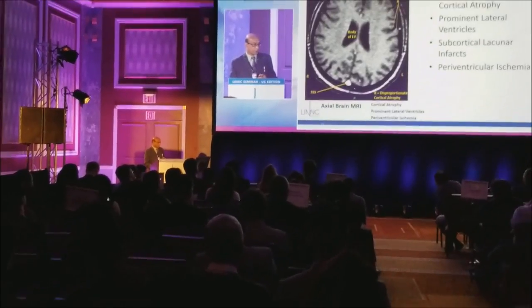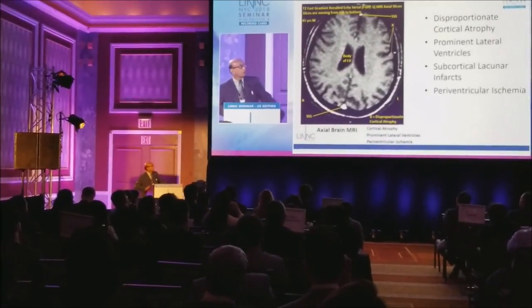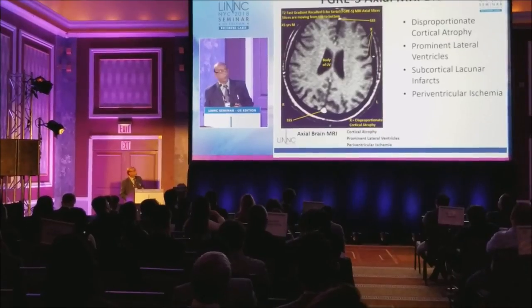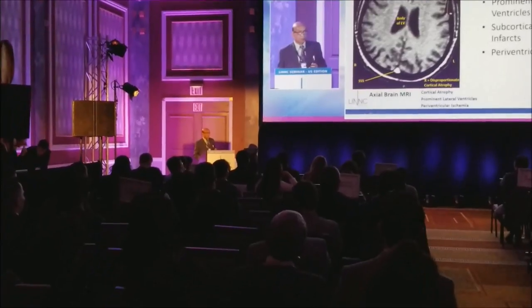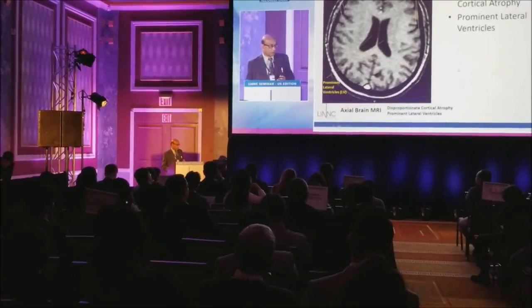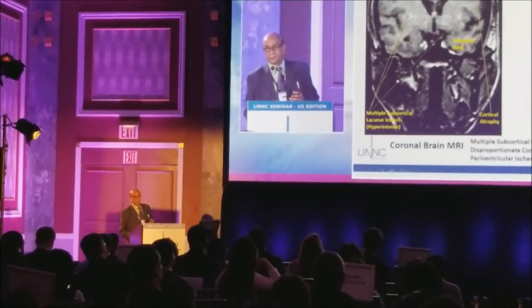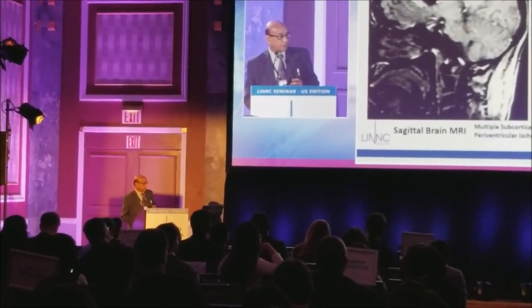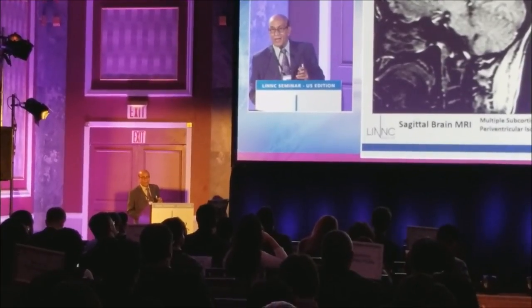So these are some screenshots to show you basically what I told you just now, so that you can see more clearly. You can see that there was a patient who was just 26 years old, but he has got disproportionate cortical atrophy. He has got compensatory hypertrophy in the lateral ventricles. He has got multiple lacunar 3 to 4 millimeter cortical infarcts. And he has got periventricular ischemia. These are fast gradient recall echo acquisition images — FGRE.